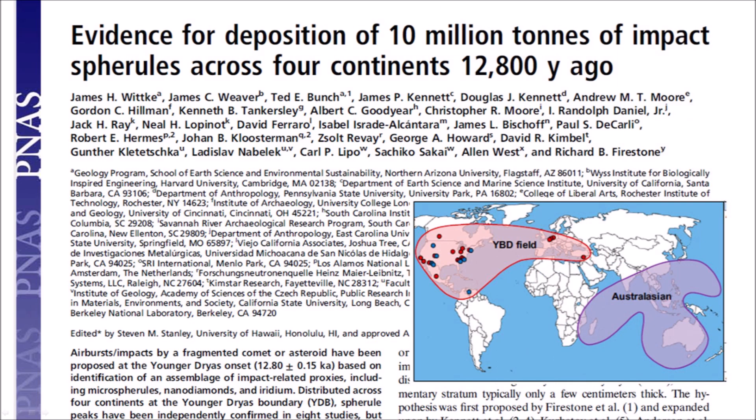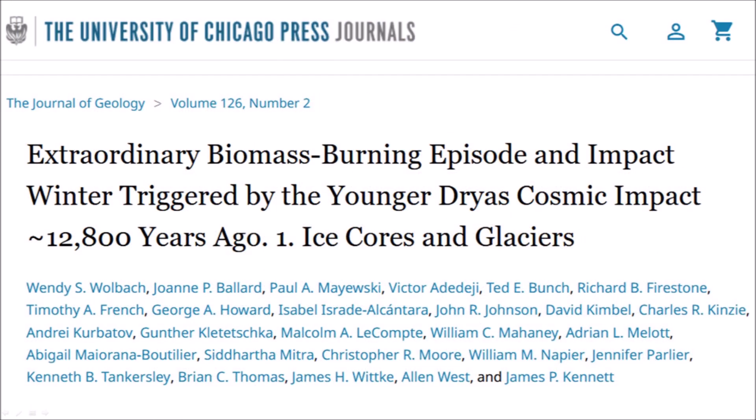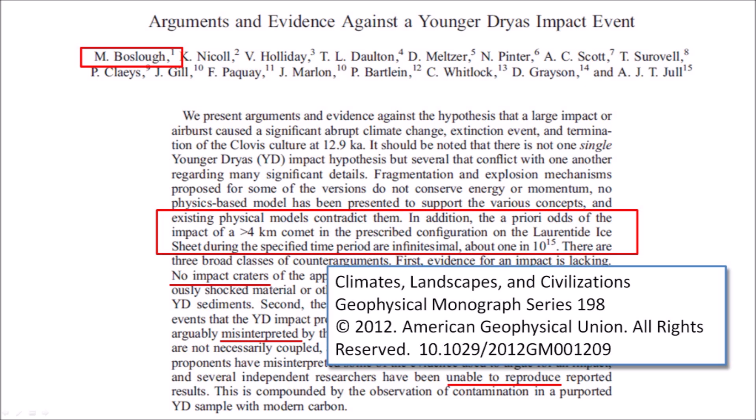The proponents of the impact hypothesis, called the Comet Research Group, were not discouraged and continued providing evidence of the worldwide distribution of impact spherules. They also provided evidence of extraordinary biomass burning triggered by the proposed cosmic impact 12,800 years ago. Mark Boslow, a physicist at Sandia National Laboratories, and 15 co-authors provided additional objections, arguing that the odds of a comet with a diameter greater than 4 km impacting at that specified time period were about 1 in 10 to the 15th power, or 1 in 1 quadrillion.